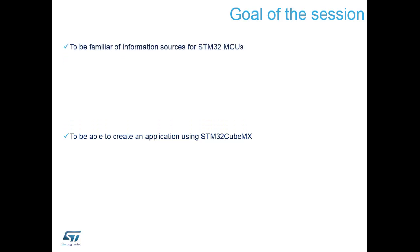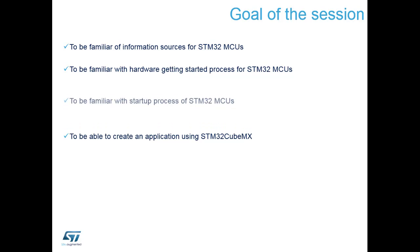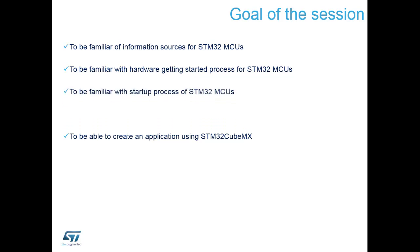To be familiar with the sources of information — the different types of documents available for the STM32, where they're located and what information is provided inside each document. To be familiar with the hardware getting started process — the components that have to sit around the microcontroller for you to physically start it up. The startup process covers what actually happens from the moment you switch the power on to the point of starting to execute your software in main.c. We'll also cover the different coding techniques you can use for the STM32 and show you the three different processes we have for coding.